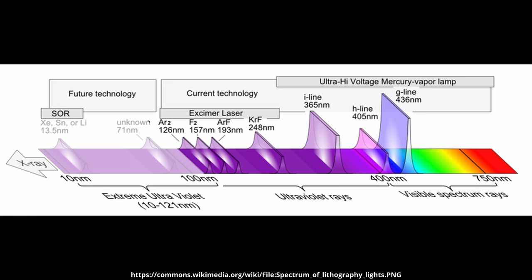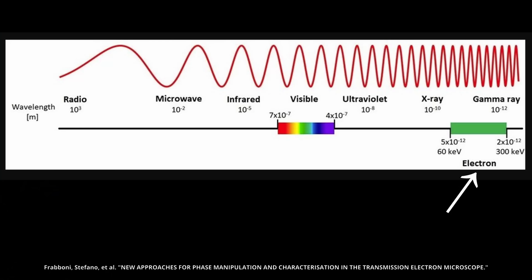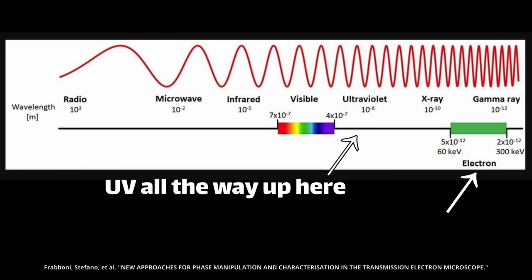The resolution of a lithographic process is dependent on the wavelength of whatever you're using. For photons, it's the wavelength of the photon, which is why lithography has moved further into the ultraviolet or extreme ultraviolet range over time. In contrast, electrons have a wavelength anywhere from 2 to 10 picometers — an order of magnitude smaller — meaning an E-beam process can give you incredibly high resolution that can't really be matched by photons.